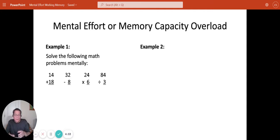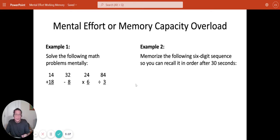So it uses both mental effort and working memory capacity. Now let's do a second example to show what it's like when both mental effort and working memory become taxed. In this example, I'm going to ask you to memorize a six-digit sequence so you can recall it in order after a 30-second delay. You'll have six seconds to memorize it so that you can keep it in mind for 30 seconds and then recall it in correct order. I'm going to ask you to do something else during those 30 seconds, but right now just focus on memorizing these six digits.